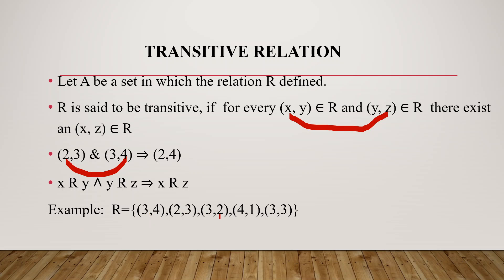Here is the relation: {(3,4), (2,3), (3,2), (4,1), (3,3)}. We check: first pair (3,4) — we look for (4, something). We find (4,1), so we need (3,1) in R. Next, (3,4) and (4,1) gives us we need (3,1) in R.